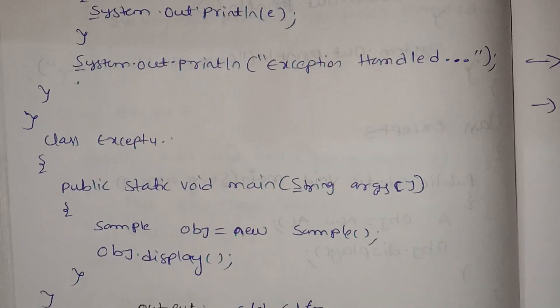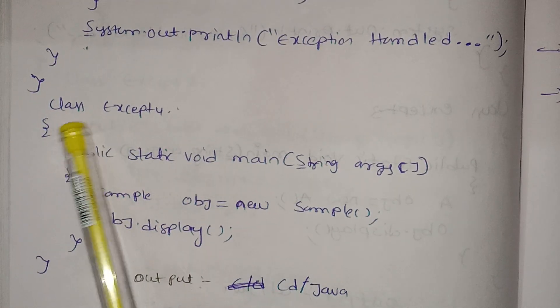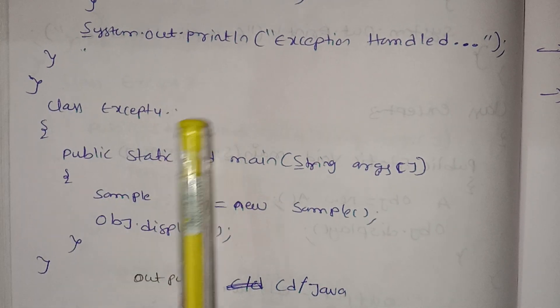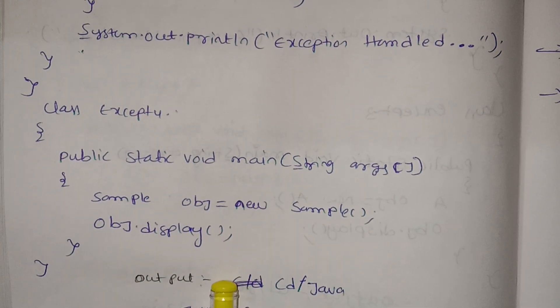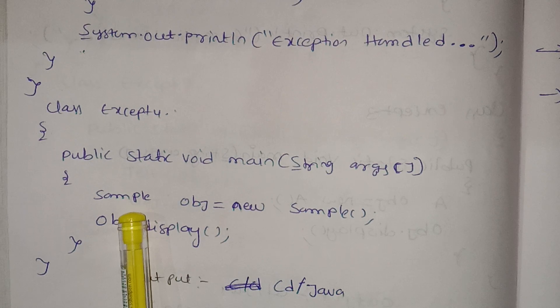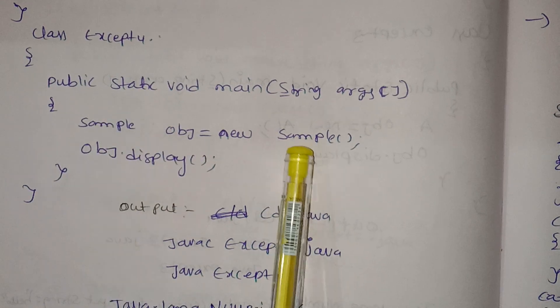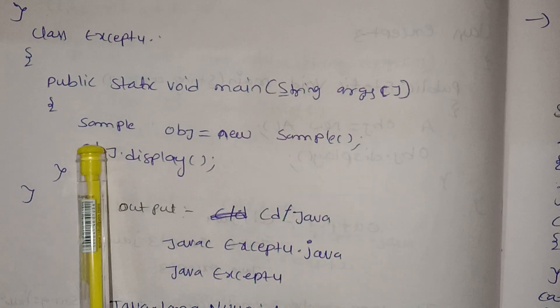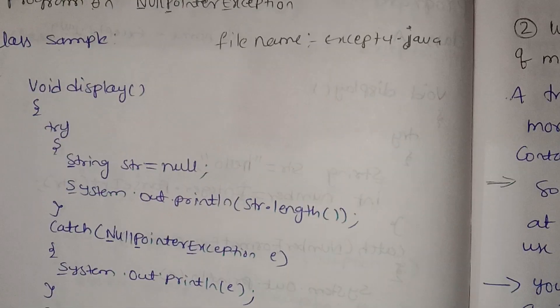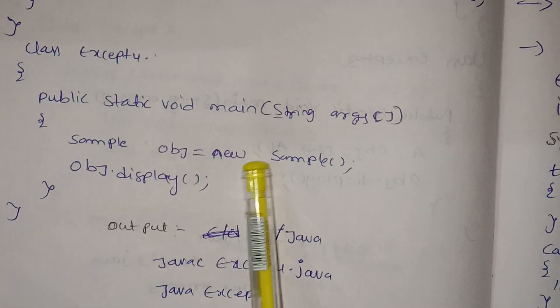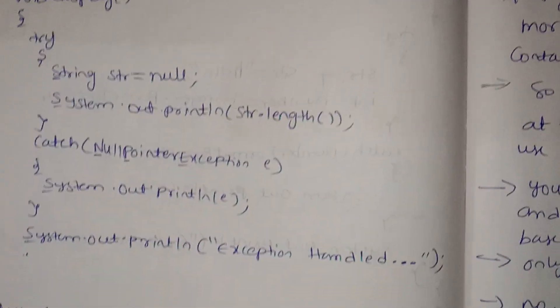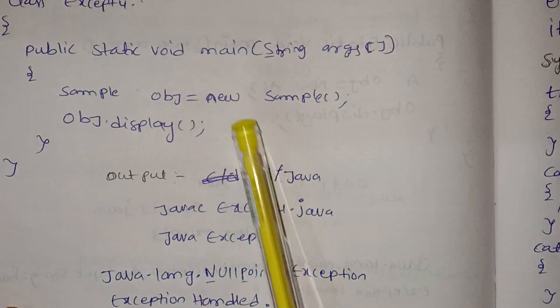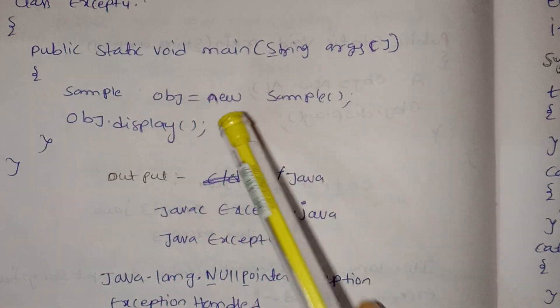Here is the exception. We will type in a message using system.out.println — 'Exception handled'. Now we will close the object method and call the object. We will create the first class name, type in public static void, and type in the main function. We will type in the sample and the class name.